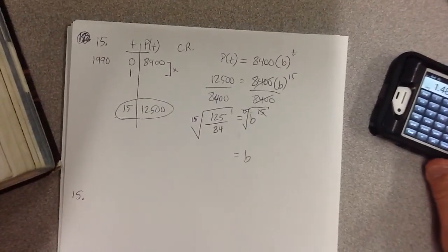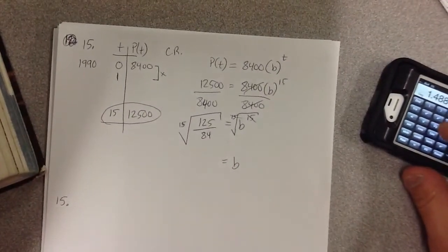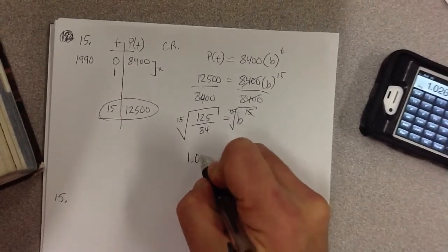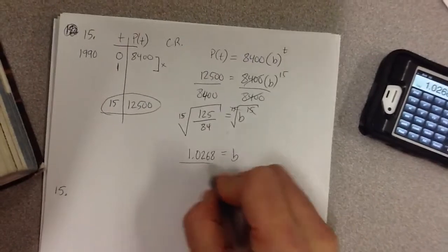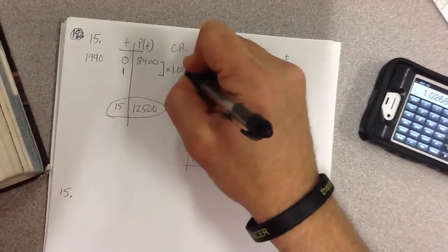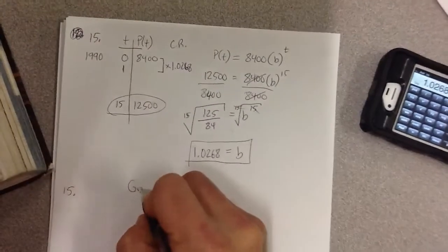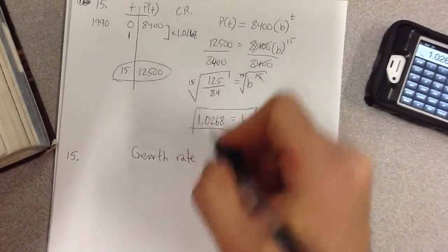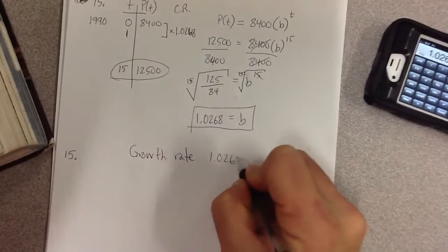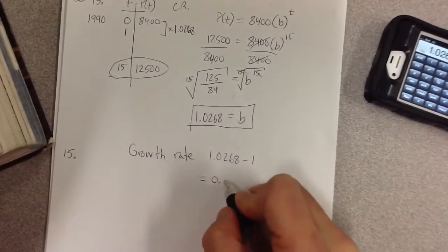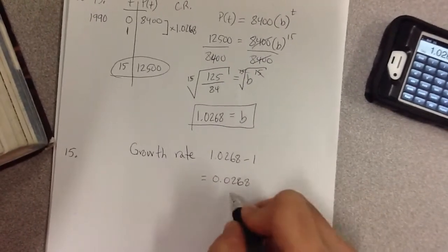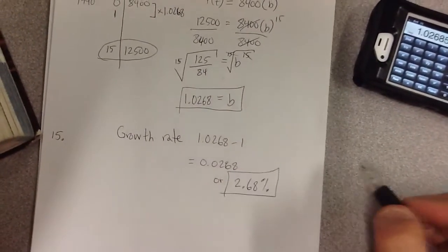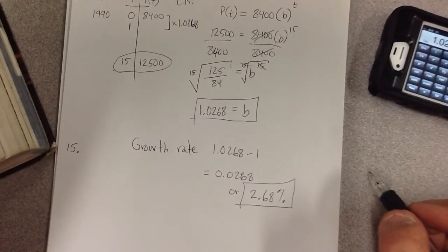And so B is equal to, if I do the 15th root of this thing, I get 1.0268, let's say. So that is the common ratio 1.0268. Now, what's the growth rate? Remember, we spoke about this in class. The growth rate will not be the common ratio. It's not 102%. Remember, the growth rate is you have to subtract 100% from this. You're going to have to subtract 1. So you get 0.0268, which in percentage is 2.68%. So therefore, the growth rate is 2.68% per year. That's how much it's growing by.